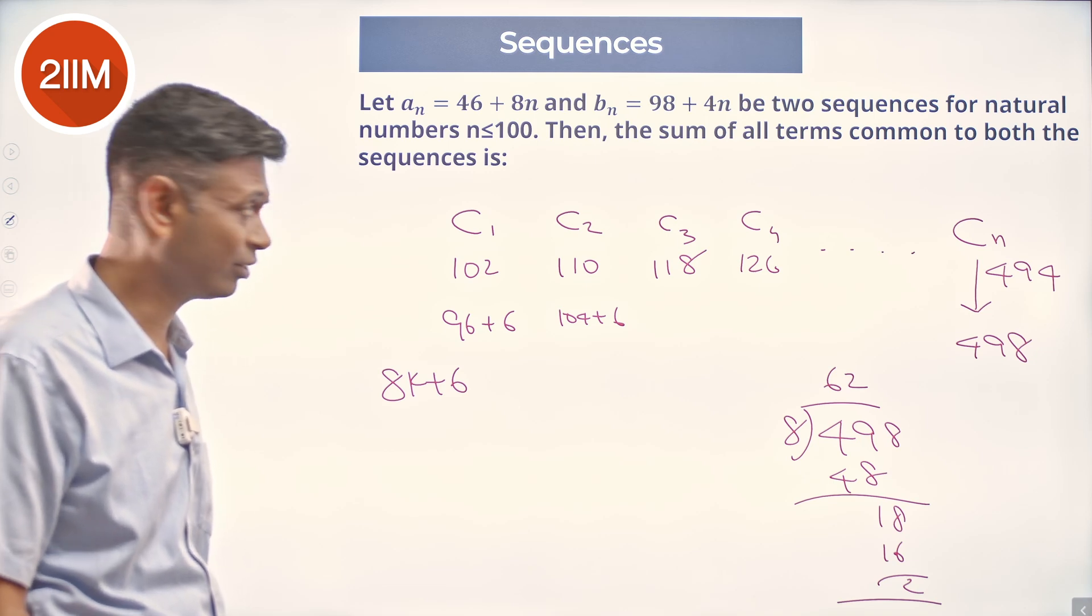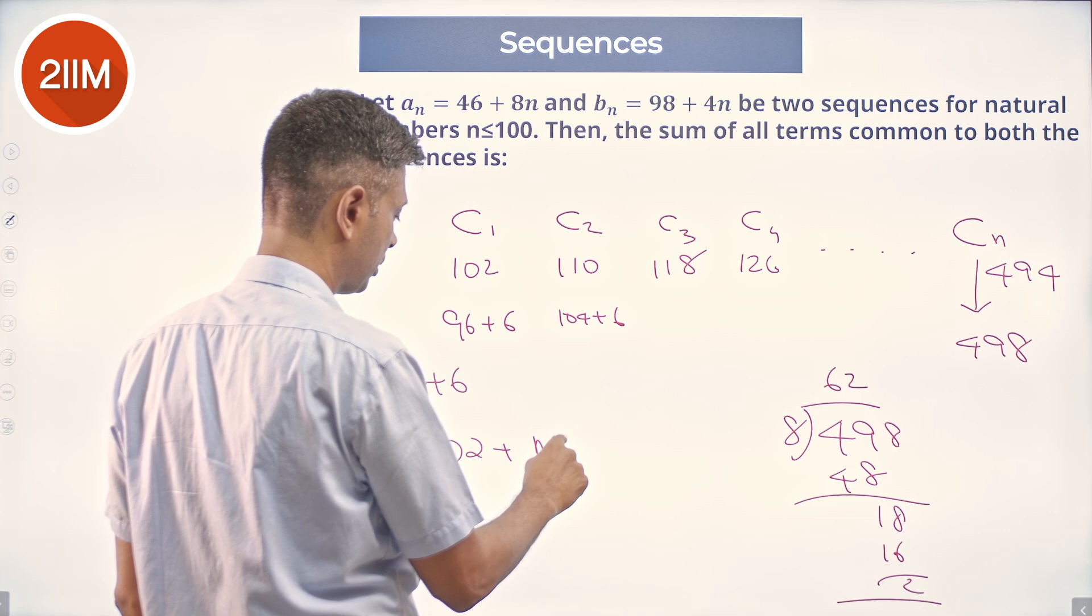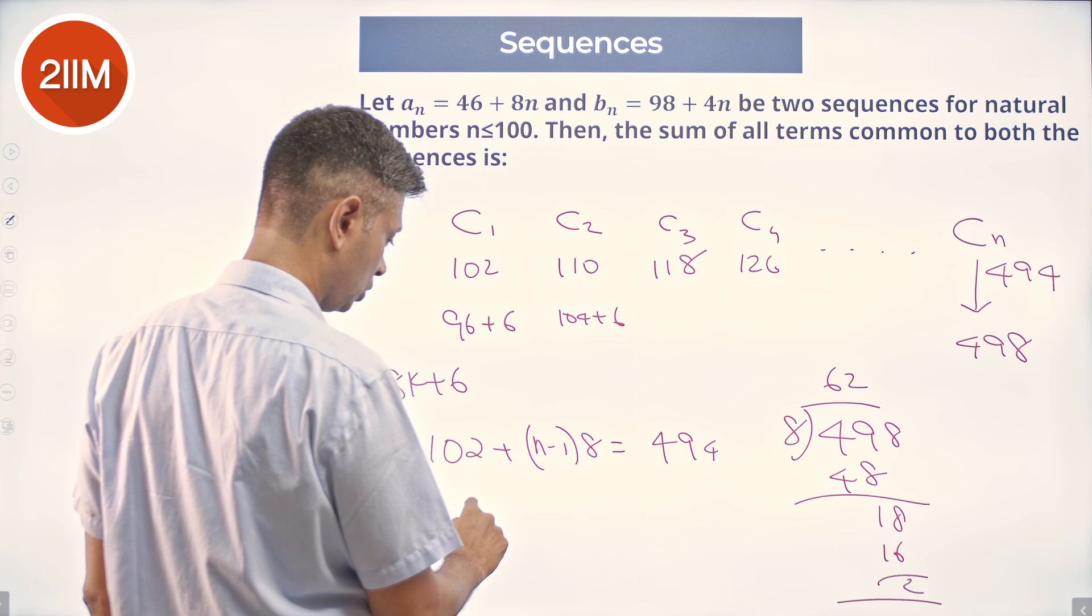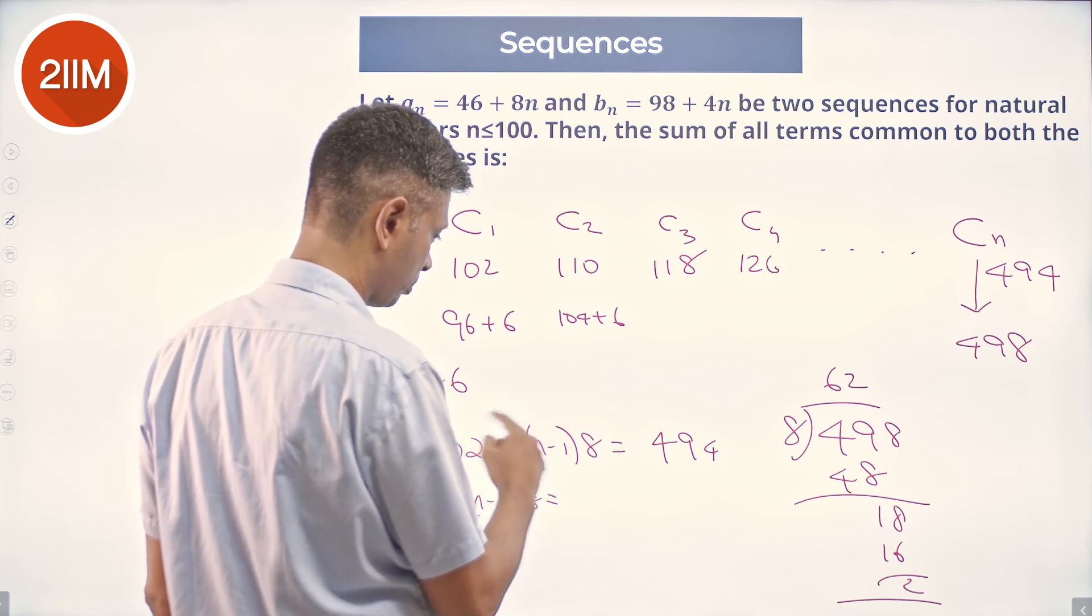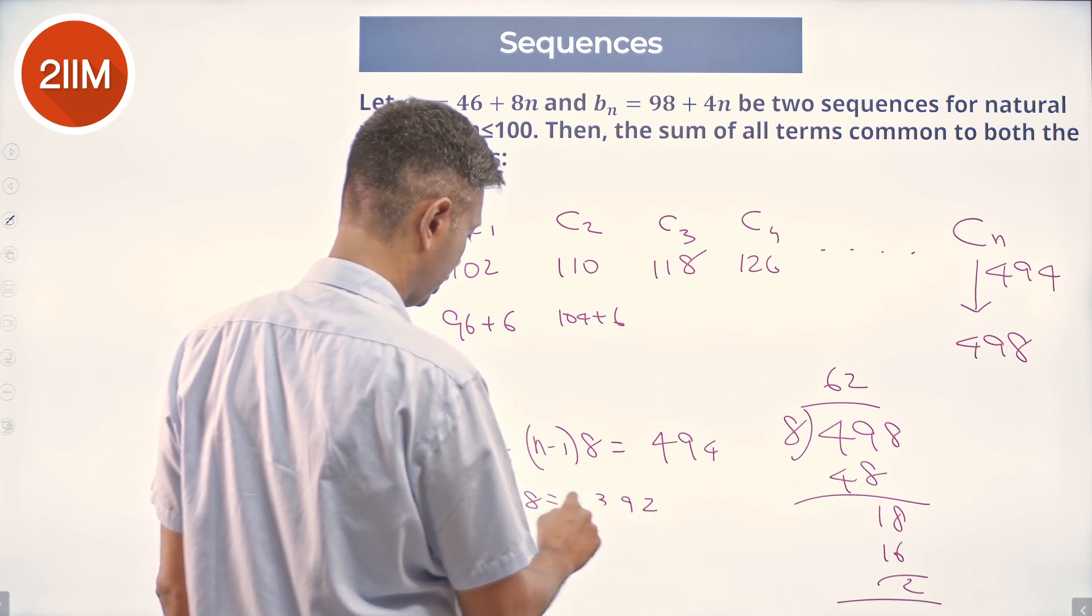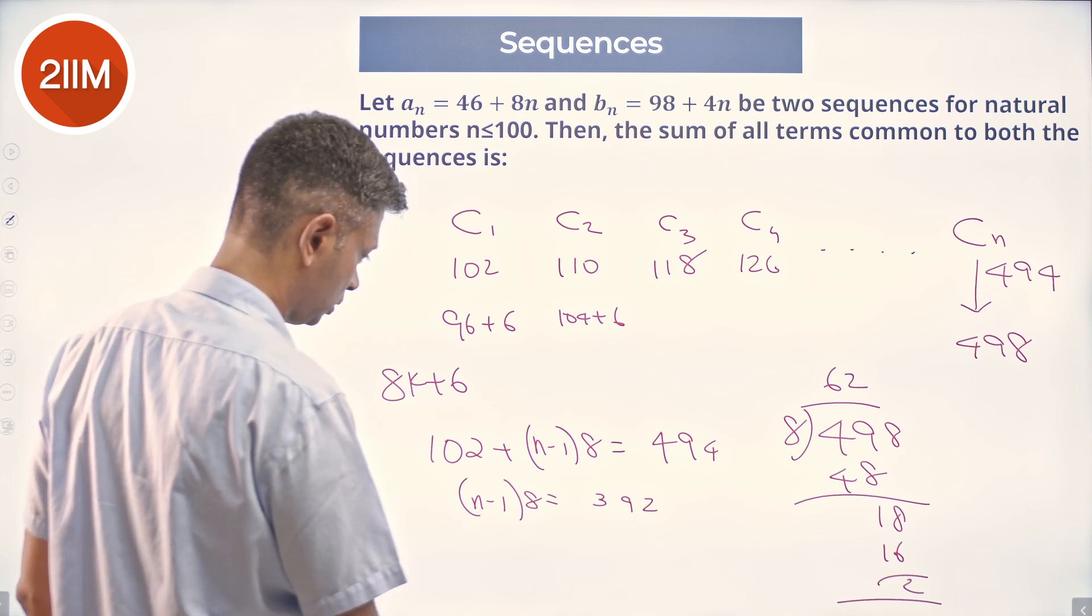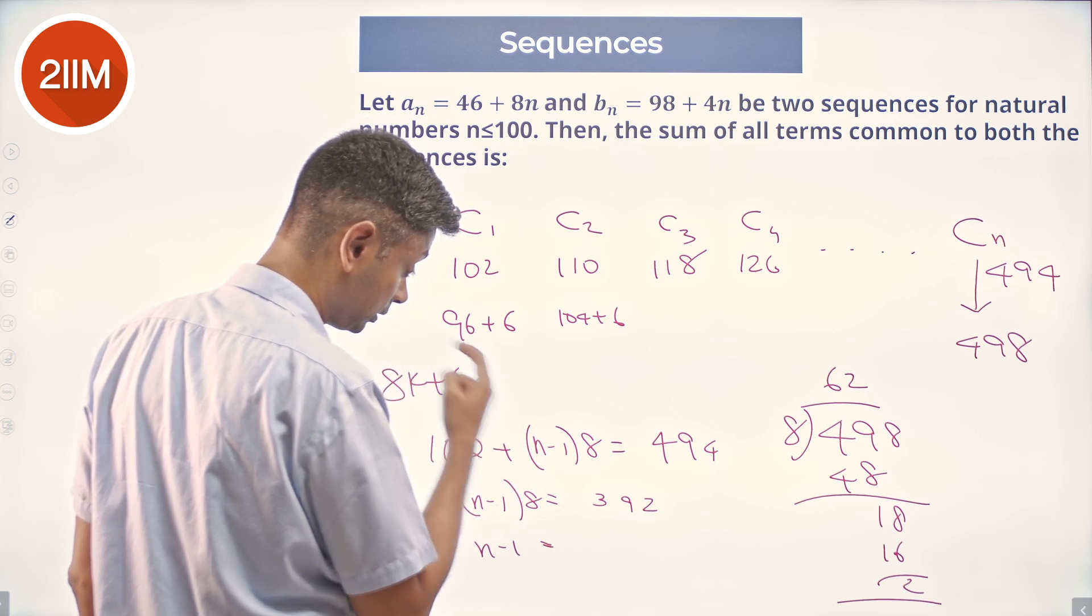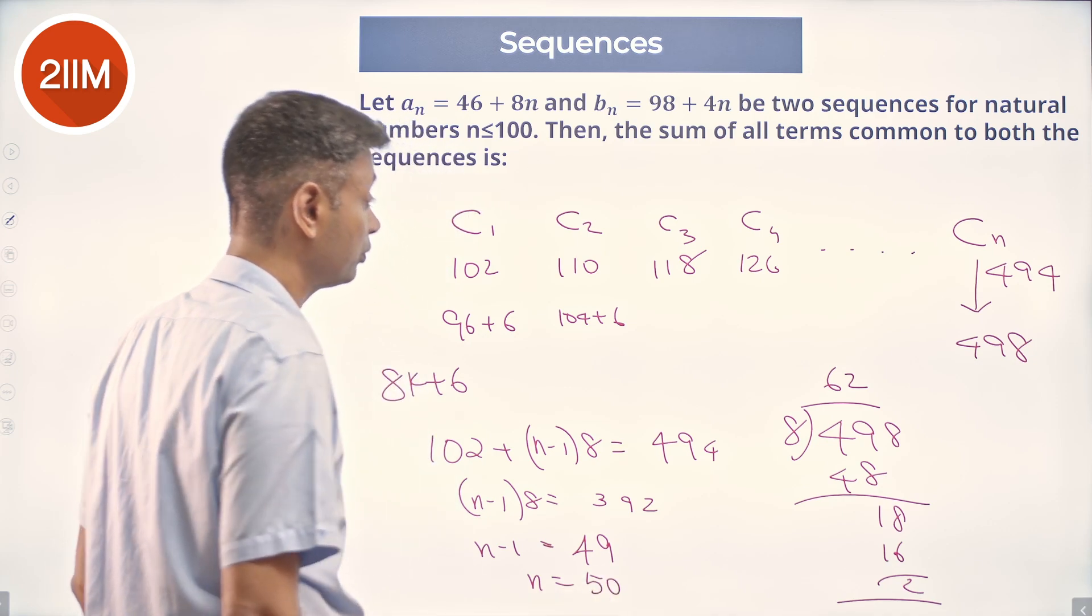How many elements are there in the sequence? This is the first term, 102 plus (n minus 1) times 8 equals 494, or (n minus 1) times 8 equals 494 minus 102, which is 392. Or n minus 1 equals 392 by 8, which is 49, or n is 50.